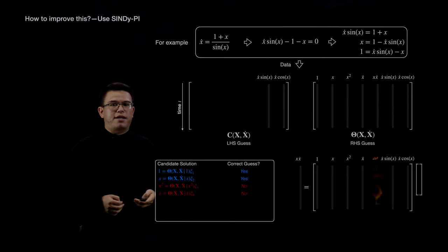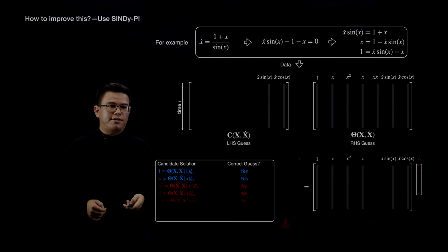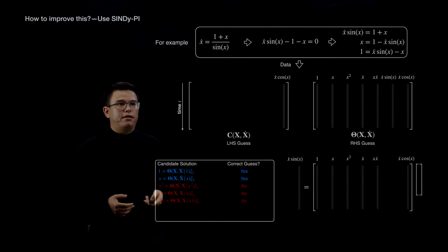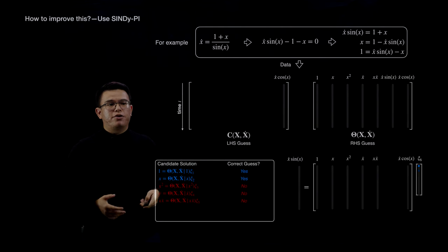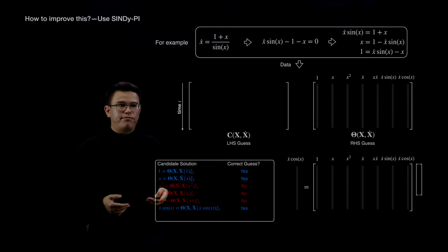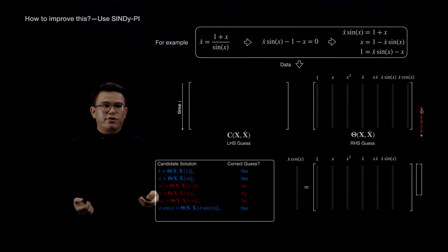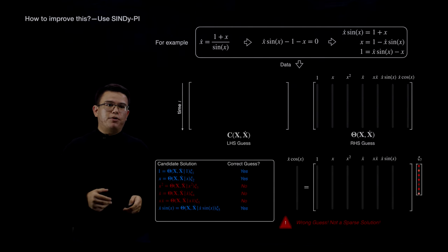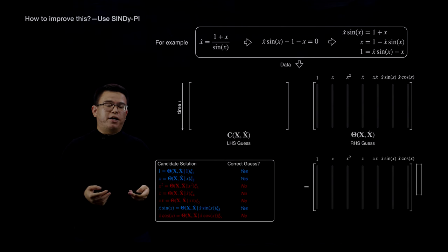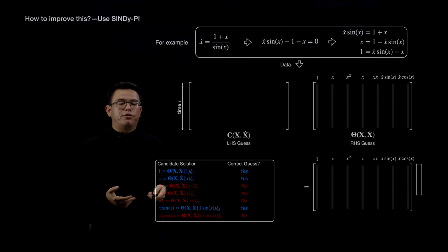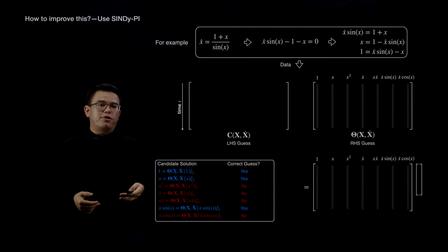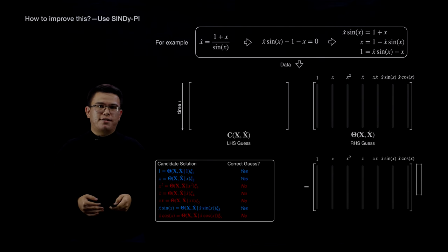Next, let's try x-dot times sin(x): this term belongs to our implicit equation, so after sparse regression you get a sparse model. We can put any term on the left-hand side as a guess for what shows up in the implicit equation, solve a sparse regression problem to generate a bunch of candidate models, and importantly each sparse regression problem is independent of the others—which means we can use a parallel toolbox to speed up the solving process. That's why we call it CINDY-PI, where PI stands for parallel and implicit.